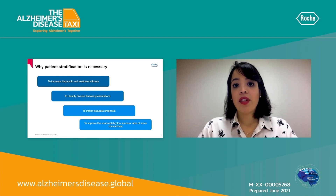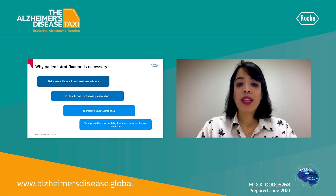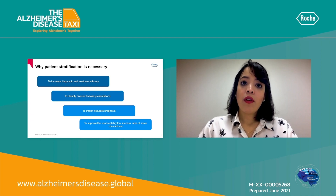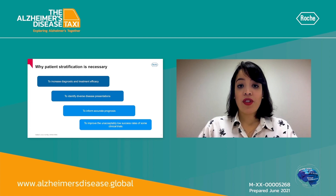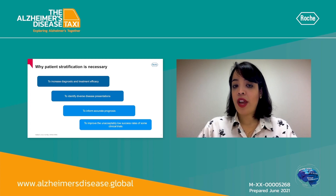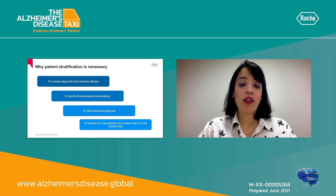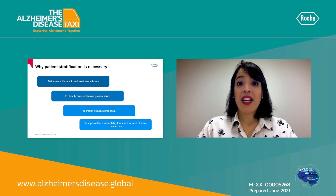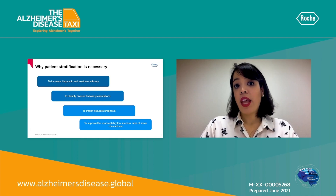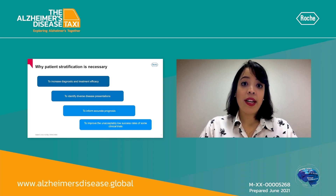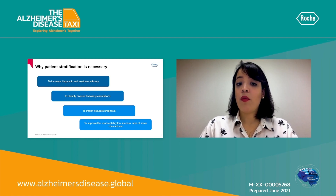Stratification is also important to decrease the number of failures in clinical trials. If we have a poorly stratified cohort in a clinical trial, it will be far more difficult to find a response in a subgroup that could be benefiting from the treatment. This could result in more clinical trials that are more expensive, take longer, and have more failures.